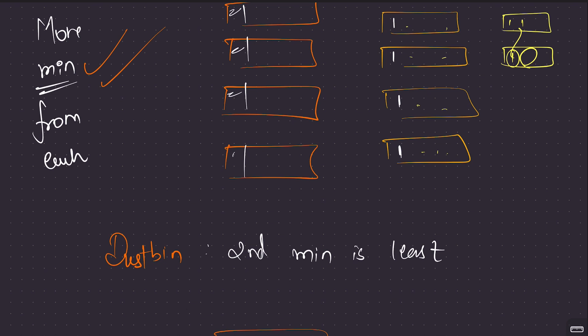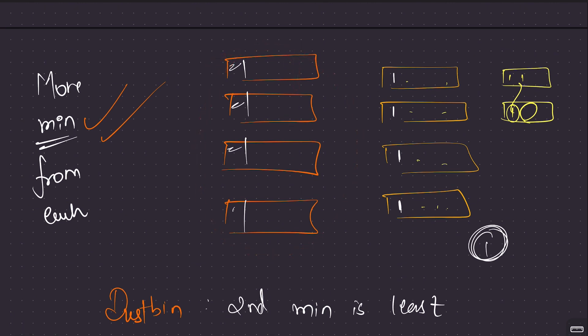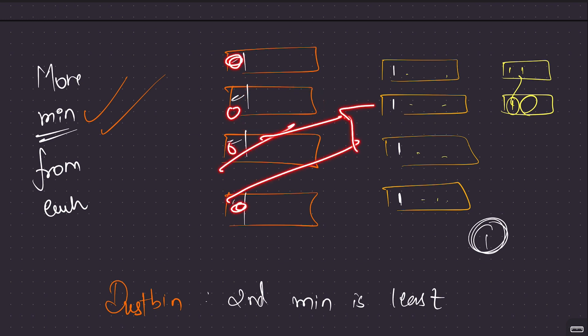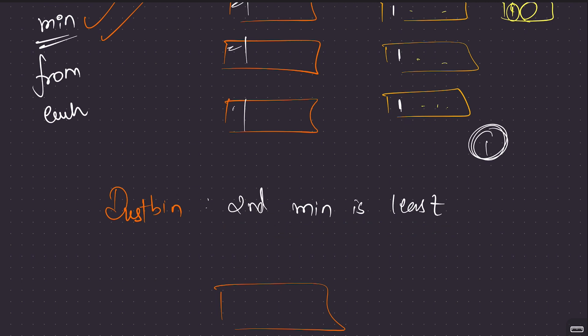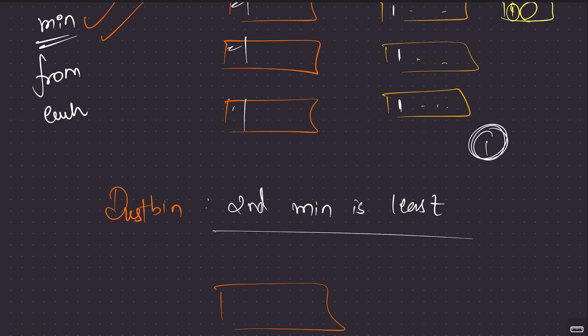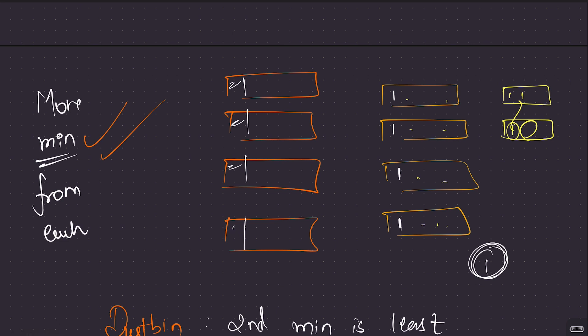For the dustbin array, the second minimum won't contribute to beauty — instead, the minimum of all elements will contribute, since we are dumping all the first minimums there. So we have to compromise on one second minimum. To maximize beauty, pick the array whose second minimum is the least as the dustbin. That way, we sacrifice the smallest second minimum and gain the global minimum in its place.